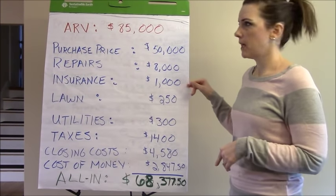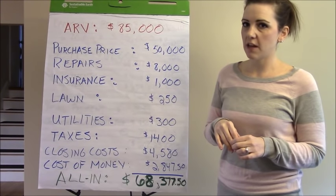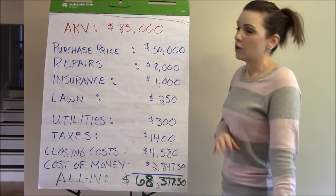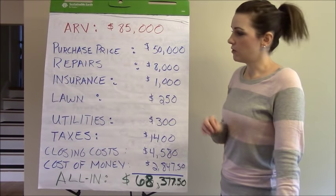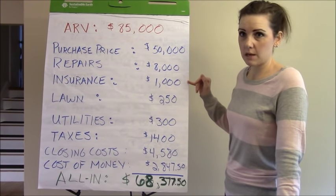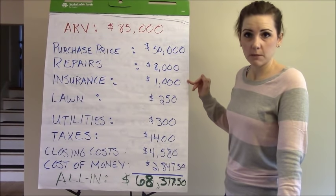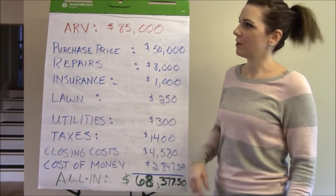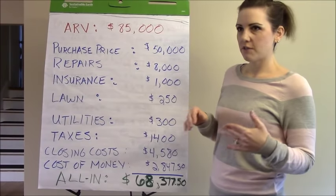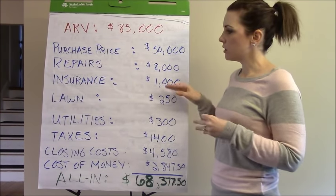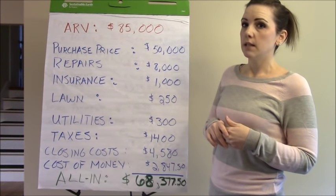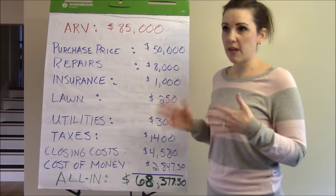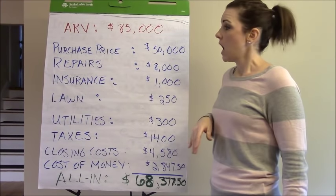The insurance cost for holding this property — we held it for about three months — was $1,000. That almost made me choke on my Cheerios when my insurance agent told me. We've flipped a lot and hold a lot of rentals, and my insurance costs for that short a time have never been this high. This project is actually what prompted me to start looking for a new insurance company, which I did. On average now for our flips and rentals, we're paying around $100 a month for a vacant property — so $1,000 for three months was not acceptable.